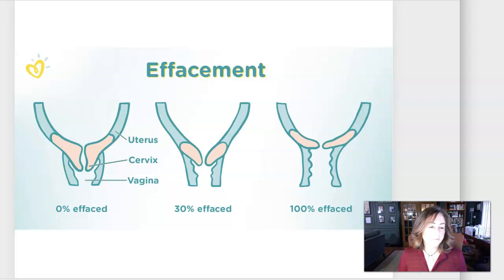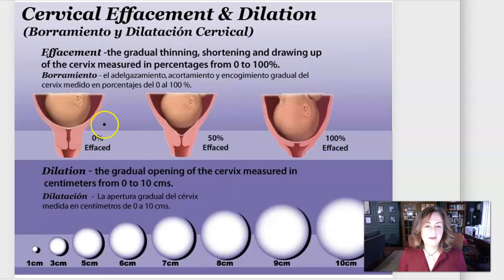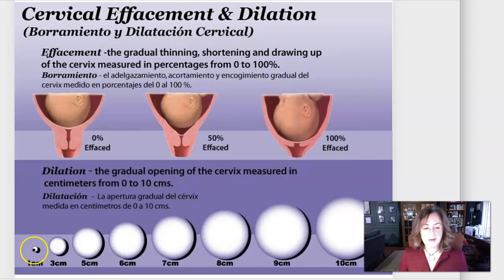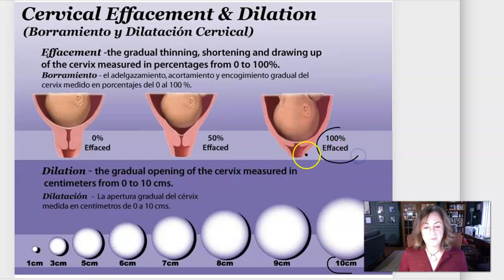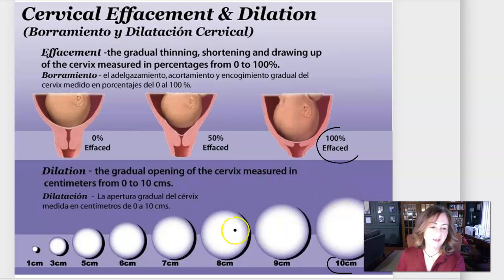The cervical opening gets bigger and bigger — they say from like a Cheerio to a bagel size opening. Once the cervical opening is dilated 10 centimeters and the person is 100% effaced, dilation is officially complete. Looking at the diagrams from the book: here effacement is complete because we don't see that long narrow cervix, and there's early dilation. Here we can see full dilation at 10 centimeters, where the offspring's head should be able to pass out of the uterus.